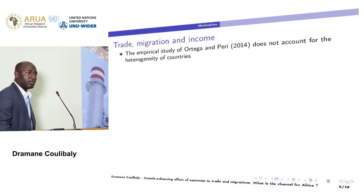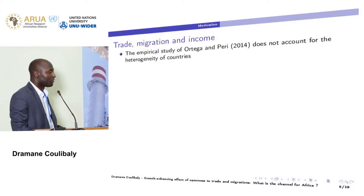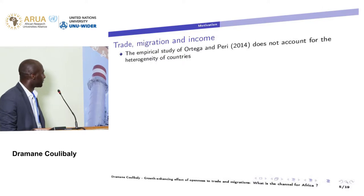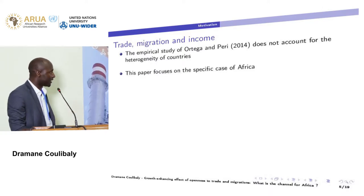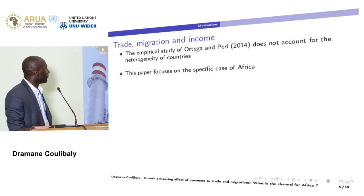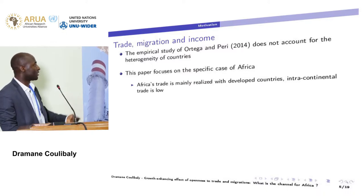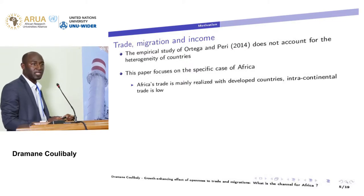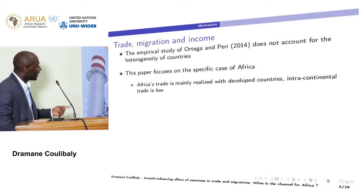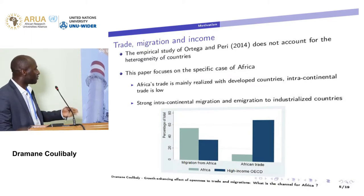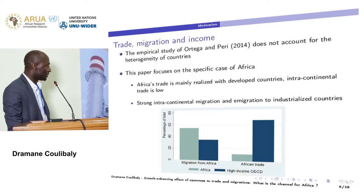However, the study of Ortega and Peri doesn't account for heterogeneity of countries. Therefore we focus on the specific case of Africa for the following reasons. First, Africa's trade is mainly realized with developed countries and intracontinental trade is very low. At the same time, there is strong intracontinental migration and immigration to industrial countries.